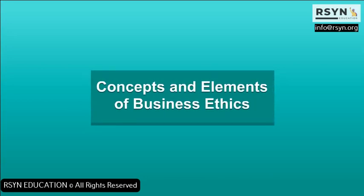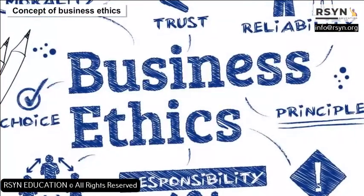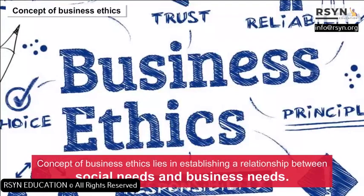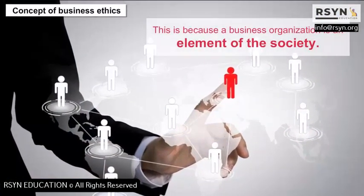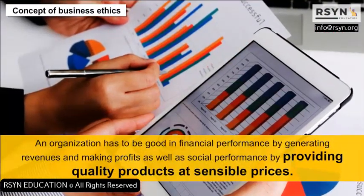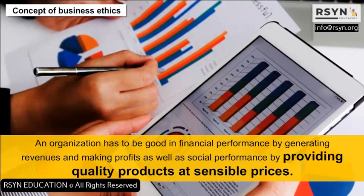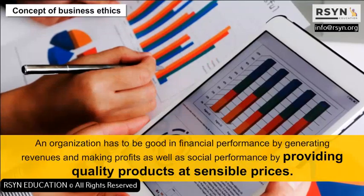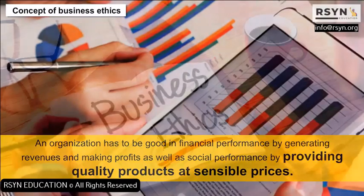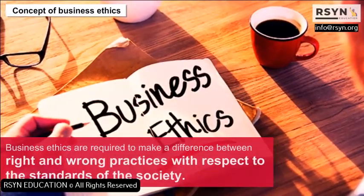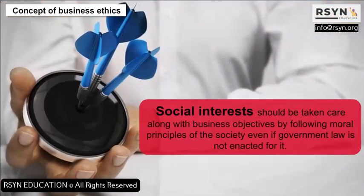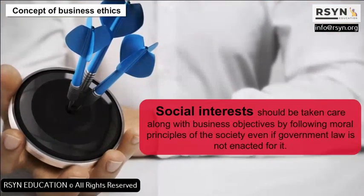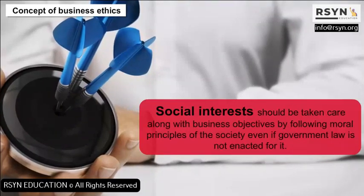Concepts and elements of business ethics: The concept of business ethics lies in establishing a relationship between social needs and business needs, because a business organization is an element of the society. An organization has to be good in financial performance by generating revenues and making profits, as well as in social performance by providing quality products at sensible prices. Business ethics are required to make a difference between right and wrong practices with respect to the standards of the society.